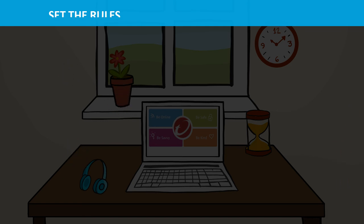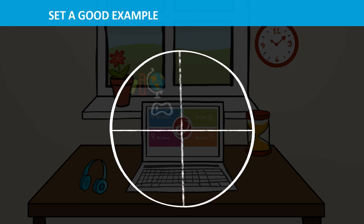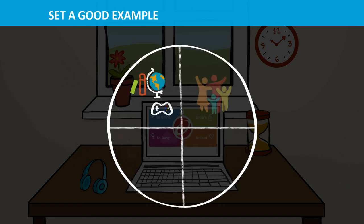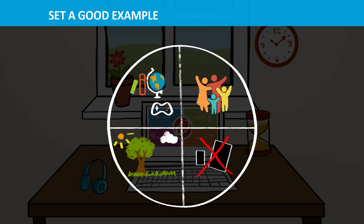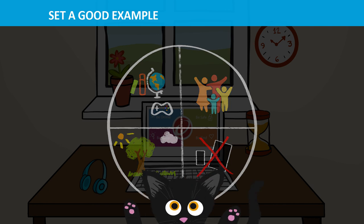Set rules for yourself. Take regular breaks and respect each person's time online. Spend time together as a family, on and offline. And don't forget your pets!